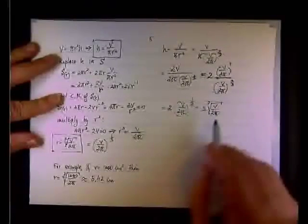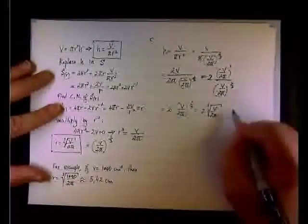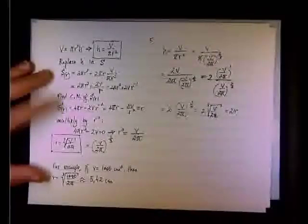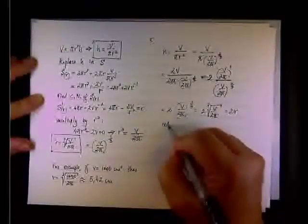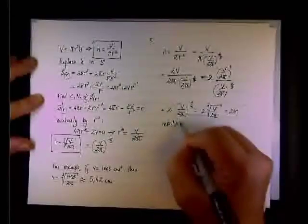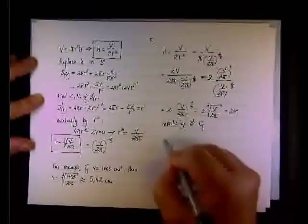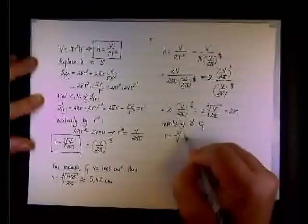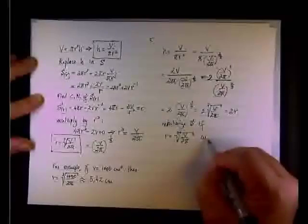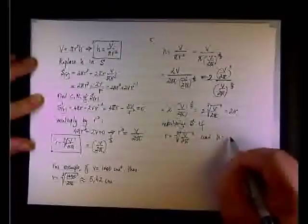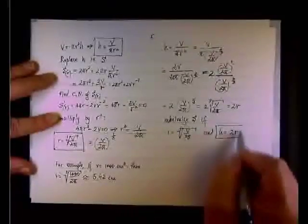Folks, what is this? What is cube root of V over 2 pi? Wow. 2r. So to maximize or minimize S, the surface area, if r equals the cube root of V over 2 pi and h equals 2r or the diameter. This is an interesting result.